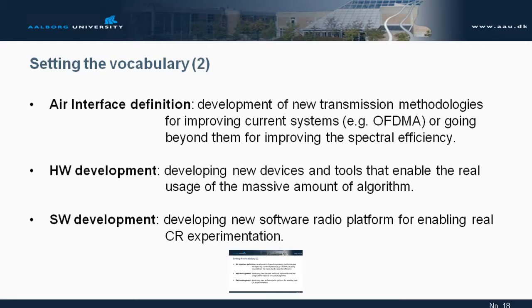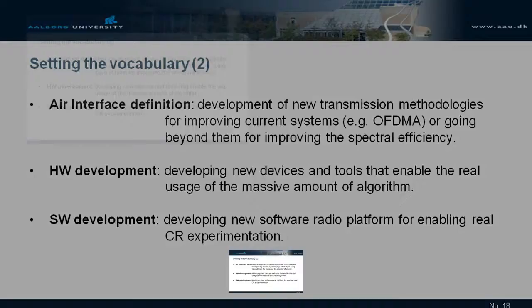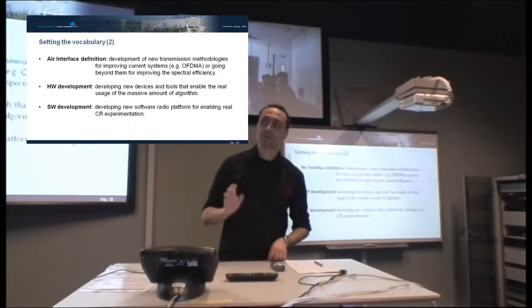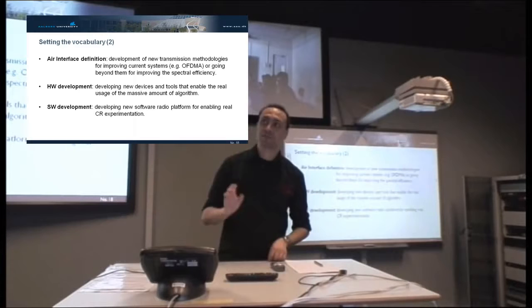With spectrum sensing we mean algorithms and techniques for understanding what is in the air. Spectrum management means making active decisions on how to optimally use the available spectrum. Radio resource management means making active decisions on how to optimally use the available local resources for guaranteeing the best user or application experience. With air interface definition I mean exactly the development of what goes in the air — OFDM, OFDMA, or going beyond, because we need to improve spectral efficiency to deal with the thousand-times traffic increase. Hardware development we discussed — we need hardware support for a proper radio. And software development, because we need software radio platforms enabling real-life cognitive radio experimentation.